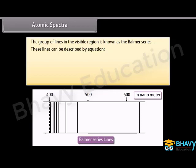The group of lines in the visible region is known as the Balmer series. These lines can be described by the equation: 1/λ = R(1/2² − 1/n²), where the value of n may be 3, 4, 5, and so on.